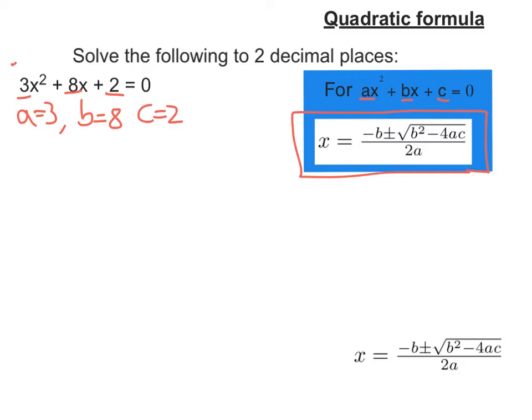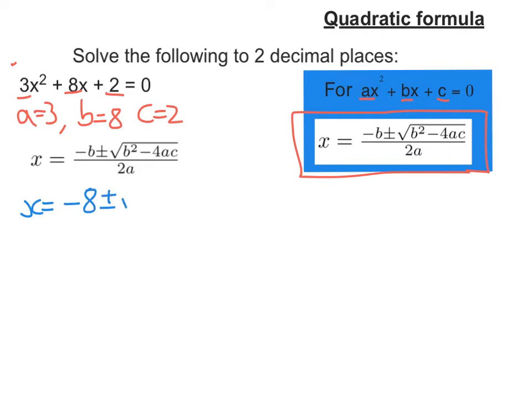I would then write out the formula. And as this is a formula question, the next line would be sub in your values. So it's minus B plus or minus the square root of B squared minus 4 times A is 3 times 2, extend my square root, all over 2 times 3.